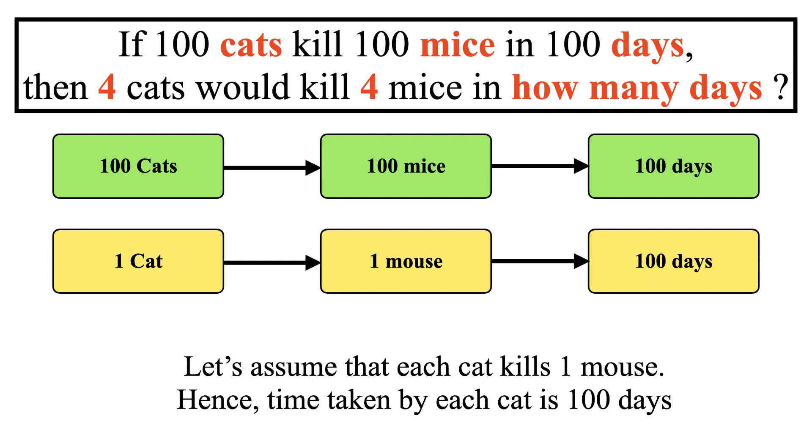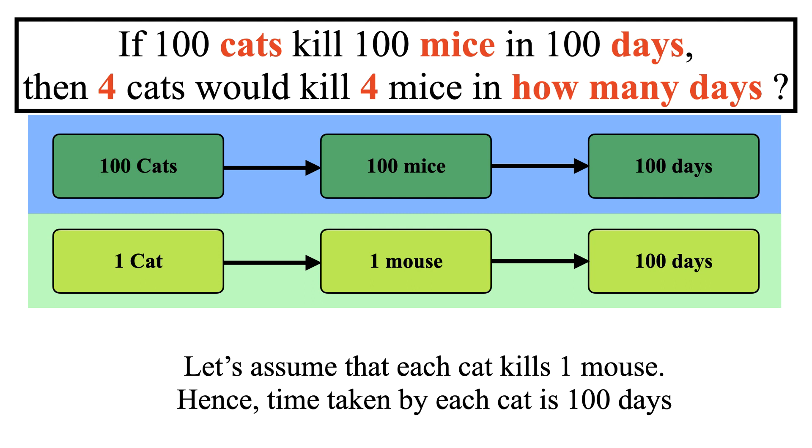Let me elaborate the solution. If it takes 100 days for 100 cats to kill 100 mice, then one cat is killing one mouse in that 100 days. Rather, if 100 cats kill 100 mice, then each cat is only killing one mouse.